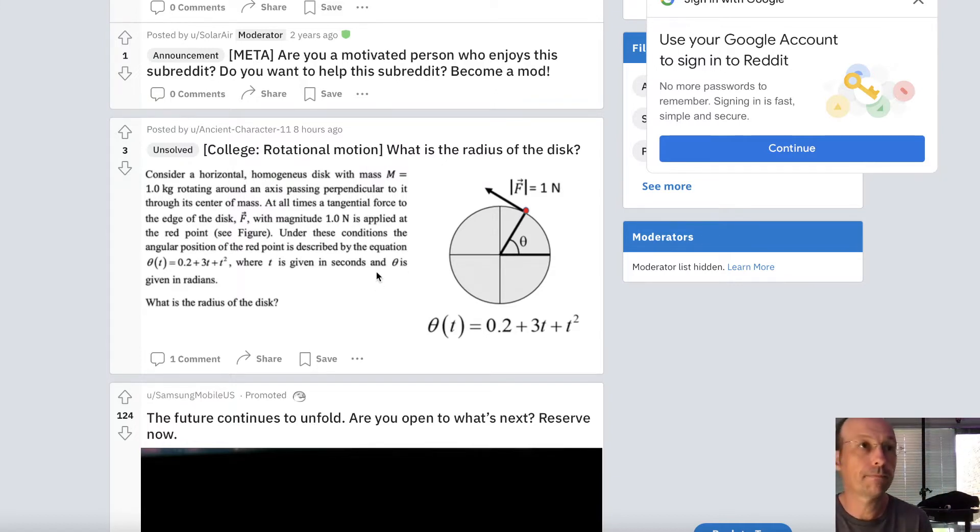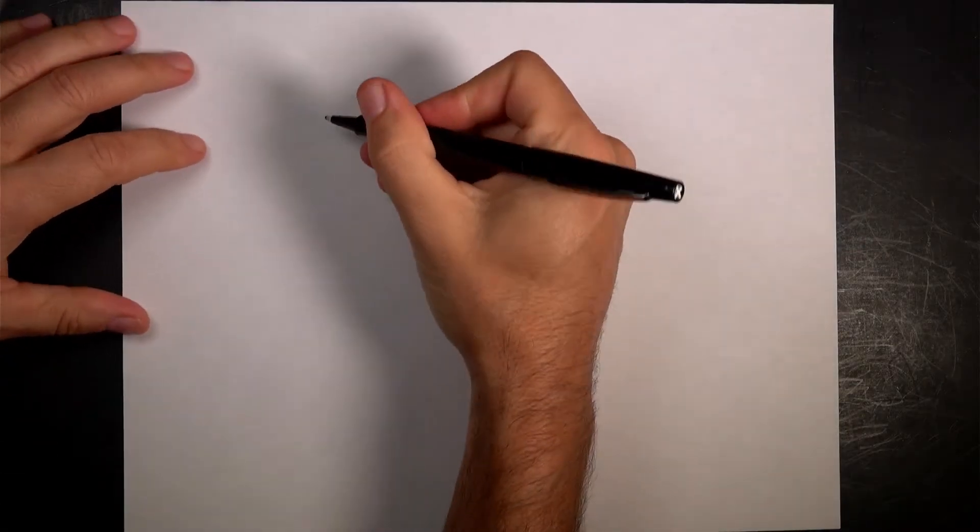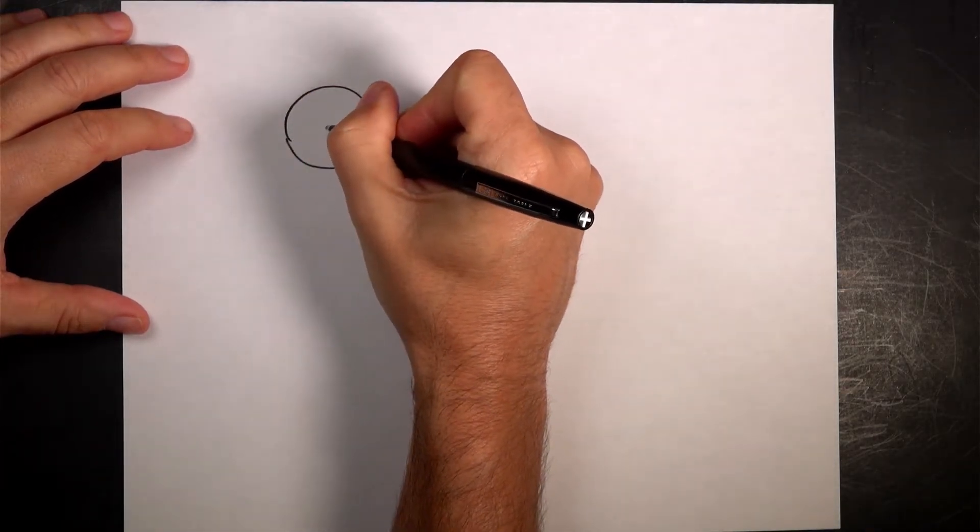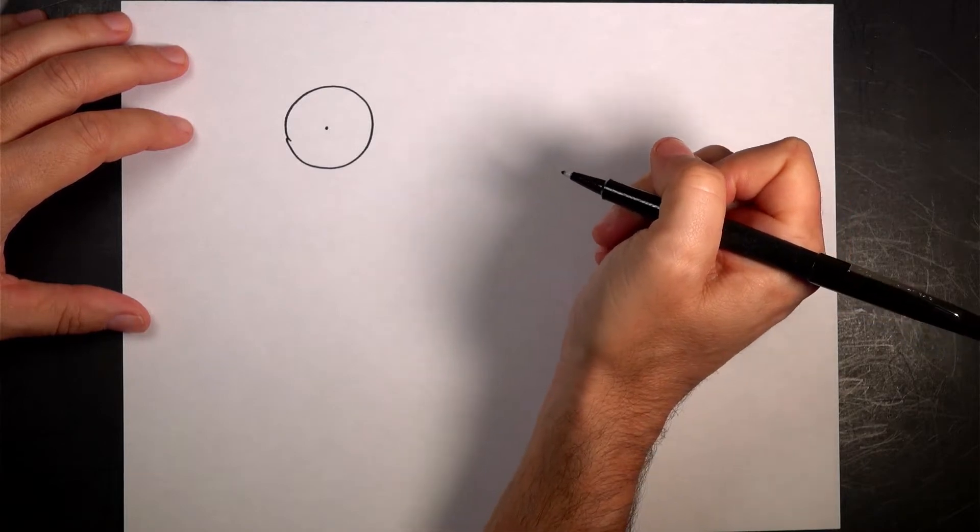Okay, so let's jump over here to the paper. Okay, so let's start off. I'm just gonna draw the disc. It always helps to draw things, I think. It helps you think about stuff. So I know that I have a disc right there. It's rotating.